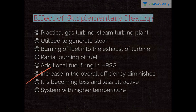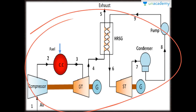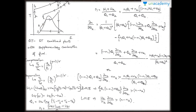Let's derive the equation. This is actually the flow diagram of a supplementary heating gas turbine — the flow diagram of a GT-ST combined plant with supplementary combustion of fuel. This is the TS diagram of a GT-ST combined plant with supplementary combustion of fuel.